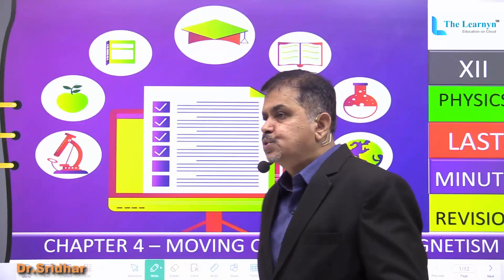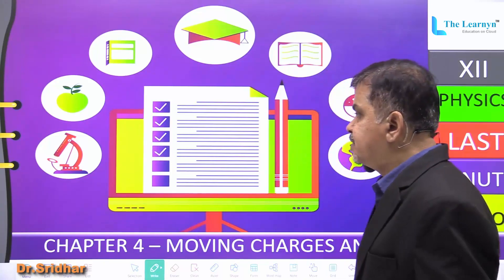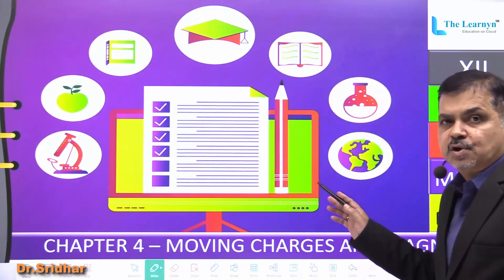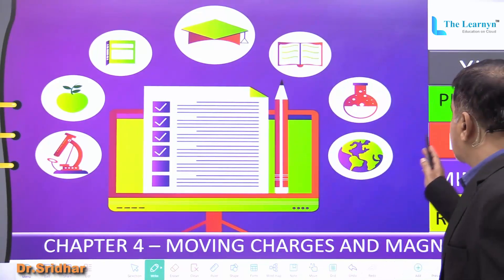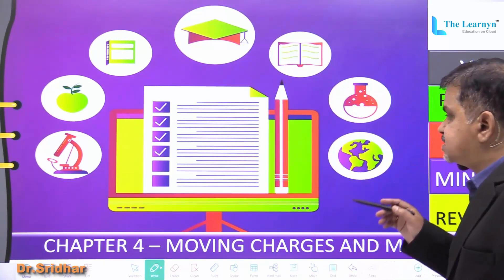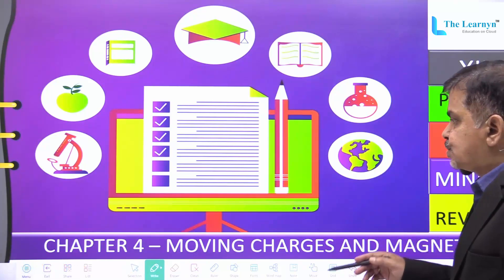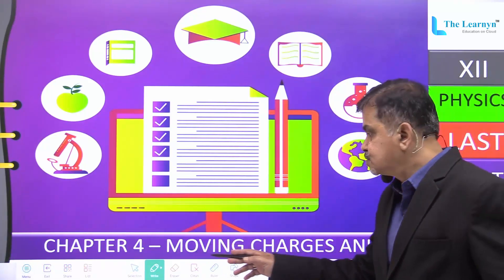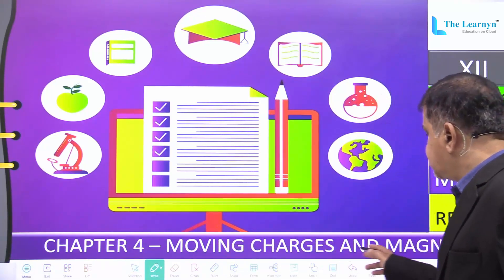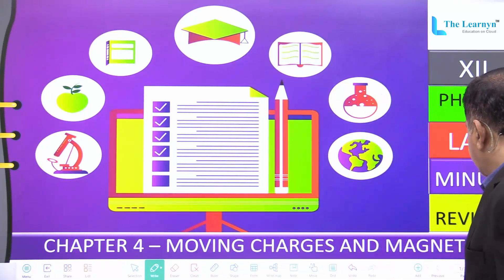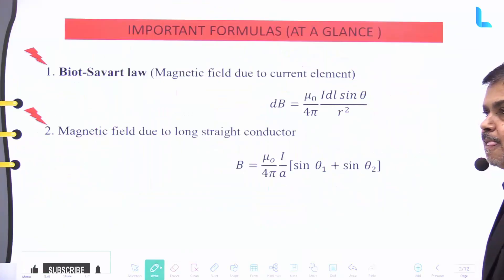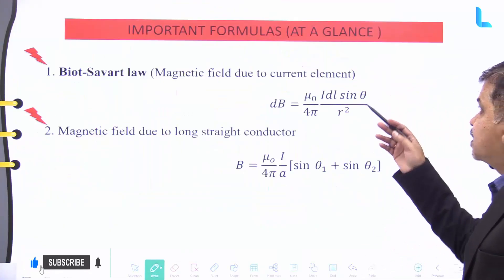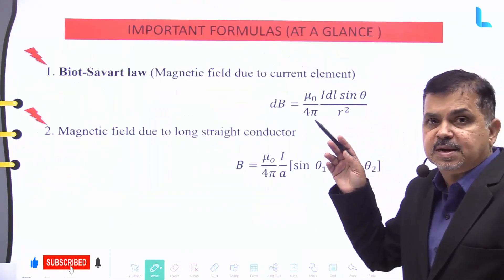Let us do a last minute revision on the subject of Physics for Class 12 CBSE. We'll take up Chapter 4, that is Moving Charges and Magnetism. We have some important formulas at a glance.